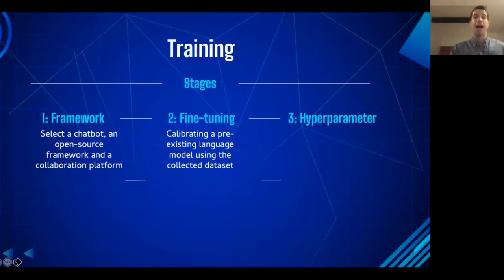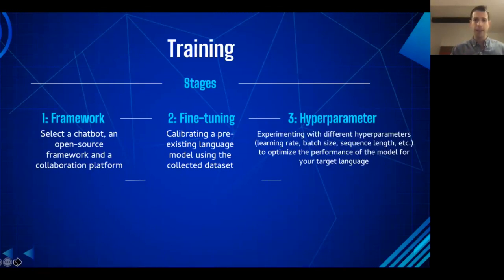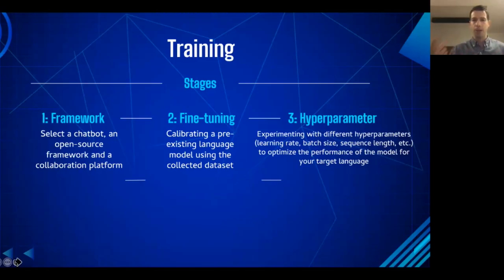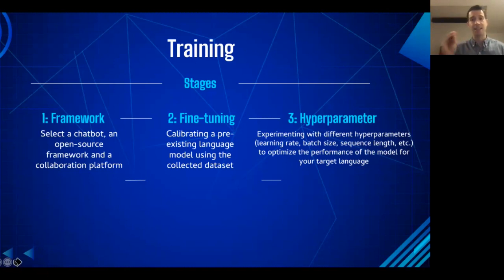Number three: hyperparameters. In this stage you will be able to experiment with different metrics — the learning rate, the batch size, the sequence length, etc. It is on the basis of those hyperparameters that you will optimize the performance of the model for the language you're trying to revitalize. What hyperparameters you choose is as important as how you train the language model on the basis of that choice.